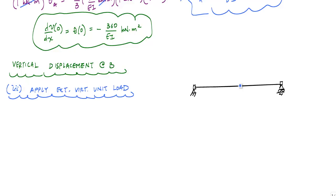Point B was at mid-span, so I am going to apply a virtual unit load at the location where I want to know the displacement. And I'm going to apply the virtual unit load downwards. Now what I want to do is figure out the virtual moment diagram,